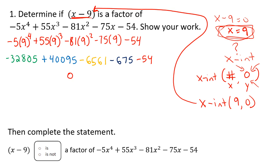We get x-intercepts from factors. Therefore, if we can prove something is an x-intercept, we can prove that it's a factor. So down below it says complete the statement: x minus 9 is or is not a factor of this polynomial. We just proved that it is because we got a 0. If you get a 0, it's a factor. If you don't, it's not a factor.